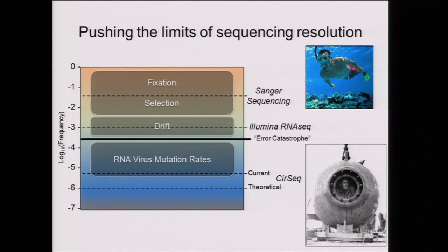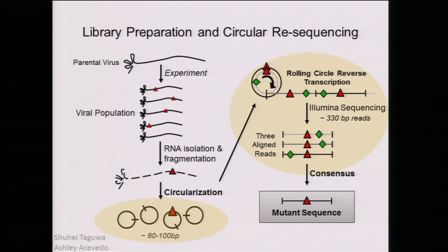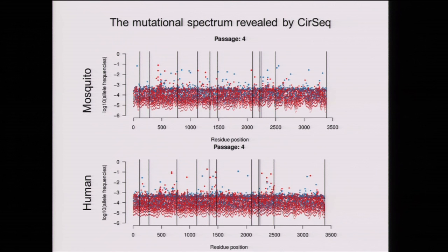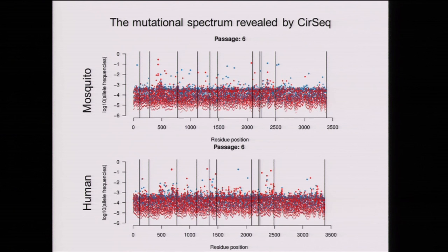To understand what's happening in these populations, we need to go very deep. We've developed a technique in the Andino lab to look at populations at or below RNA virus mutation rates. It's a standard RNA-seq procedure except we circularize fragmented RNAs after purifying them, then do rolling circle reverse transcription to build a consensus sequence that lets us find the original mutant sequence from sequencing errors. This gives us a spectrum of mutations where we can watch alleles going up and down—red is non-synonymous, blue is synonymous throughout the talk.